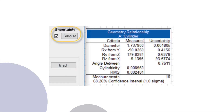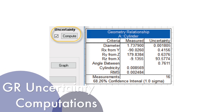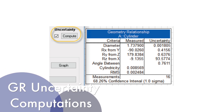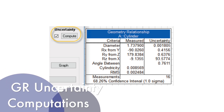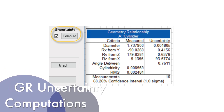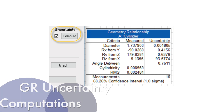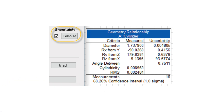The Geometry Uncertainty Computation Process has been integrated within Geometry Relationship Reports. This allows you to include the uncertainty values directly in the Geometry Relationship Criteria field.